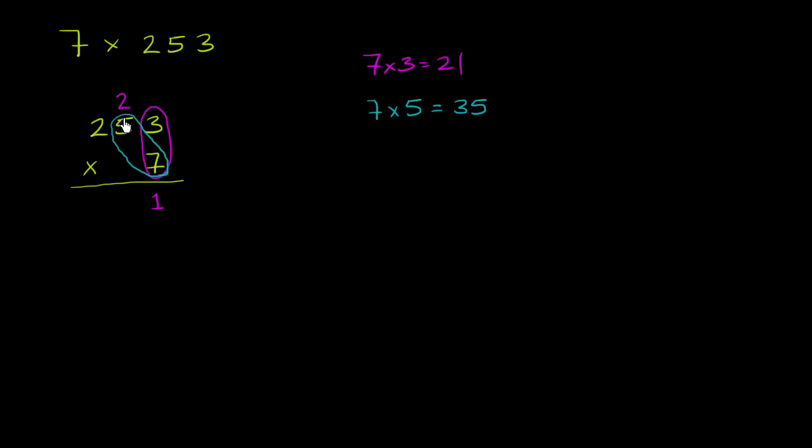So we compute 7 times 5 is 35, but then we also add that 2. So 35 plus 2 is 37. Now we write the 7 in the tens place and carry the 3.